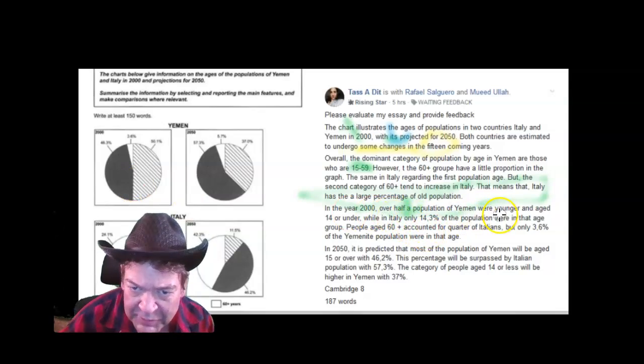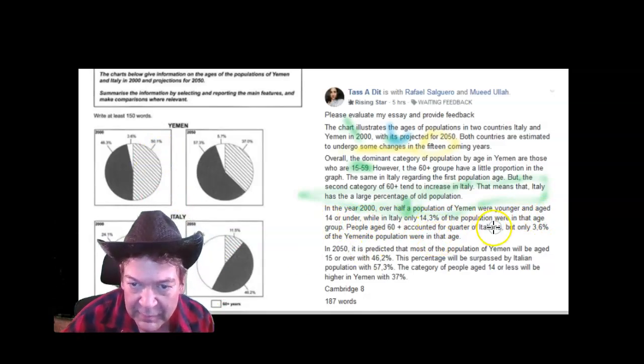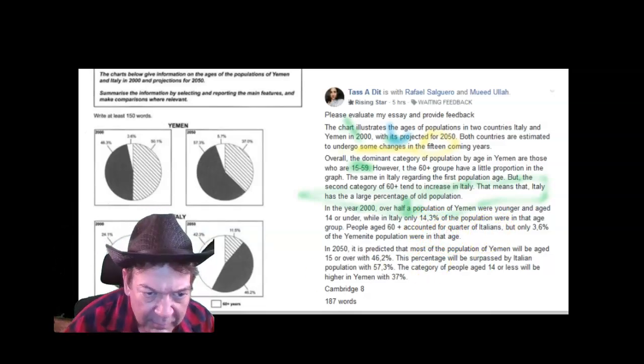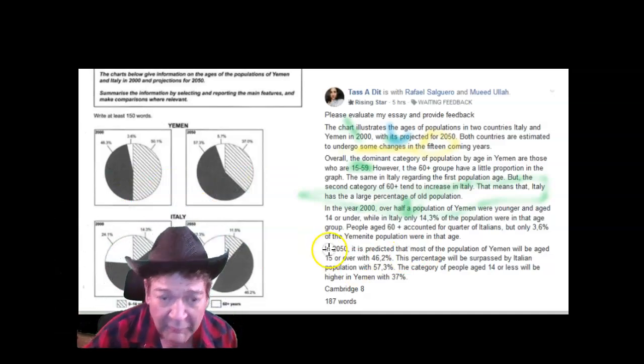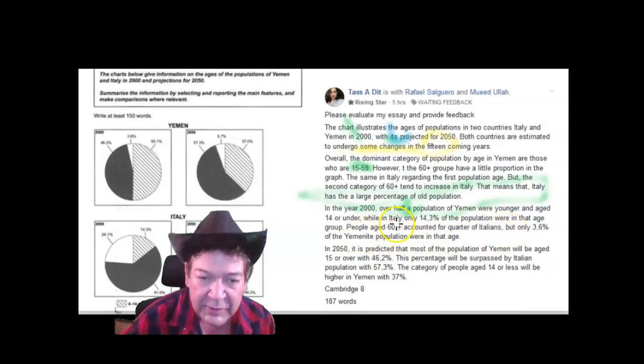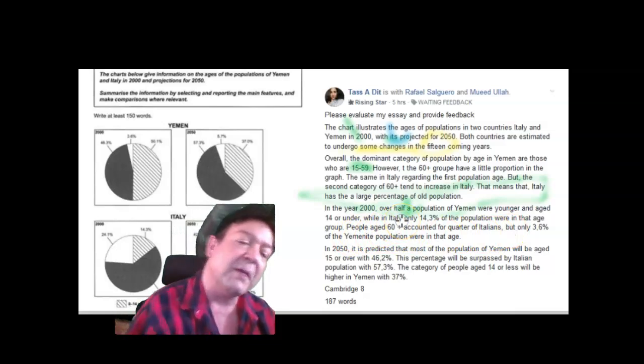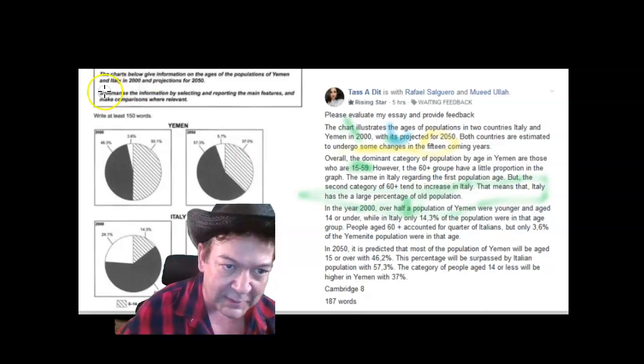Over half the population of Yemen were younger and aged 14 or under. Oh, 50.7, yeah. But over half the population was aged 14 or younger. That's all you need. And while in Italy, only 14.3 populations were in that age group. So you've described it. Why not make a comparison? What does it say right here? Make comparisons.